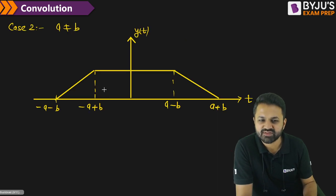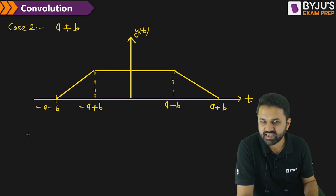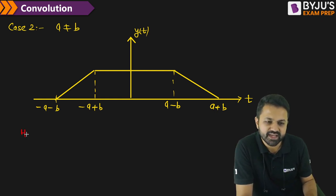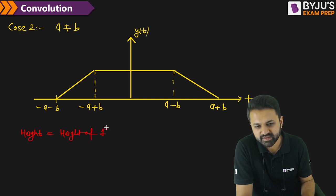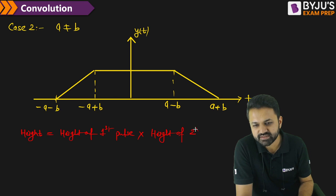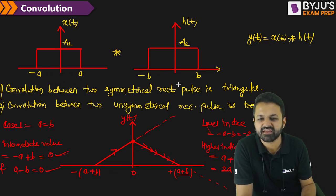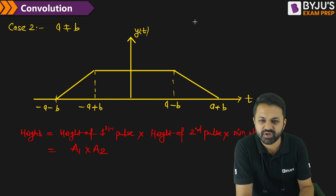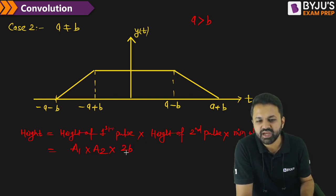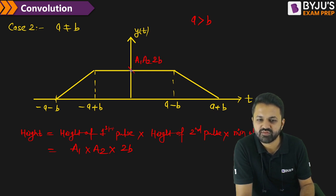How do you get the height of the trapezoid? The height is calculated using the area property: the area of y of t equals the product of the area of the first and second pulses. As a shortcut, the height equals the height of the first pulse (a1) multiplied by the height of the second pulse (a2), multiplied by the minimum width of the two pulses. If A is greater than B, the minimum width is 2B. So the height becomes a1 times a2 times 2B. You can also verify this using the area property.